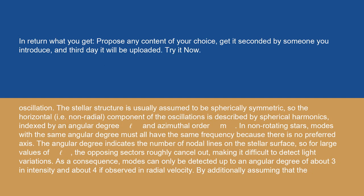The stellar structure is usually assumed to be spherically symmetric, so the horizontal, i.e. non-radial, component of the oscillations is described by spherical harmonics, indexed by an angular degree ℓ and azimuthal order m. In non-rotating stars, modes with the same angular degree must all have the same frequency because there is no preferred axis. The angular degree ℓ indicates the number of nodal lines on the stellar surface, so for large values of ℓ, the opposing sectors roughly cancel out, making it difficult to detect light variations.